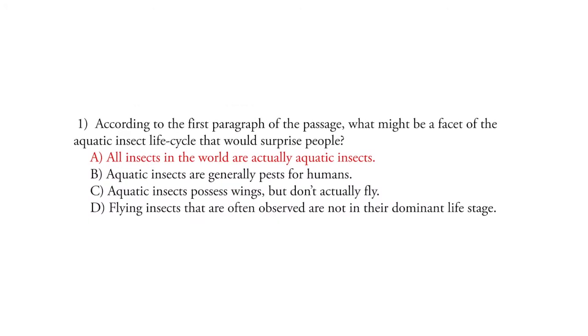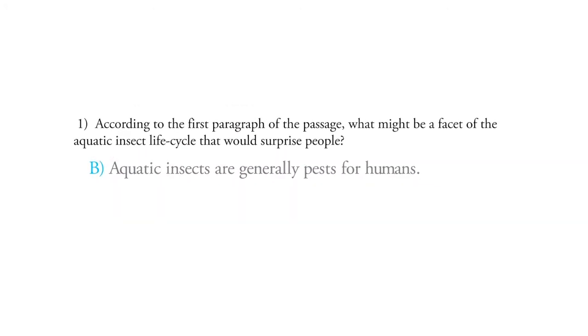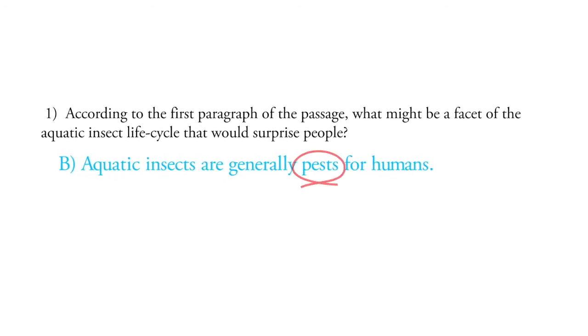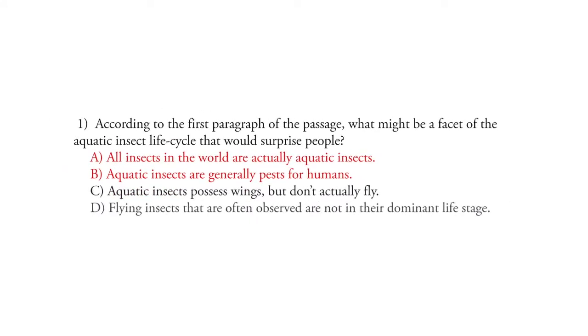Let's look at choice B: aquatic insects are generally pests for humans. This is not something that the passage talks about at all, really. So this doesn't seem right.